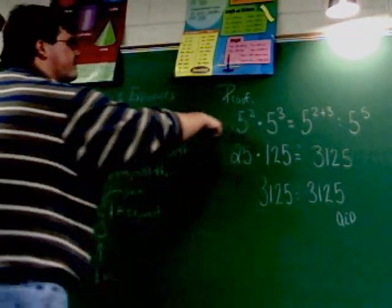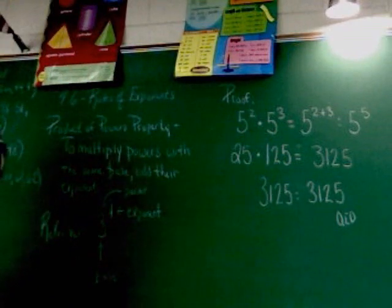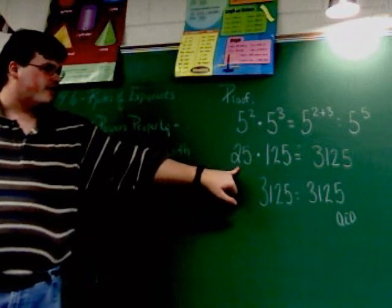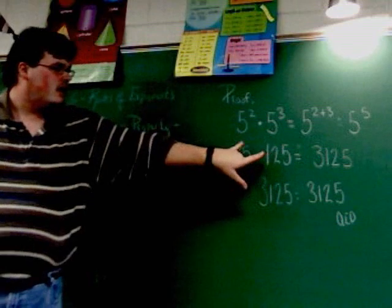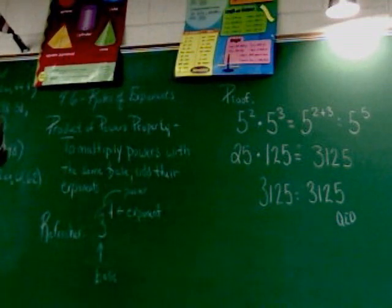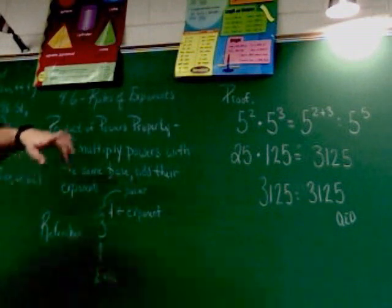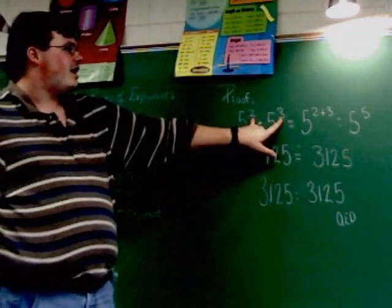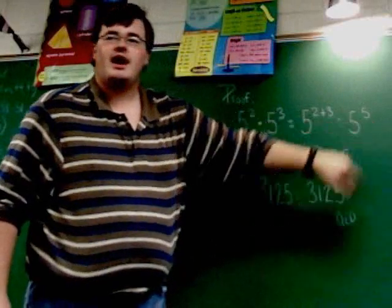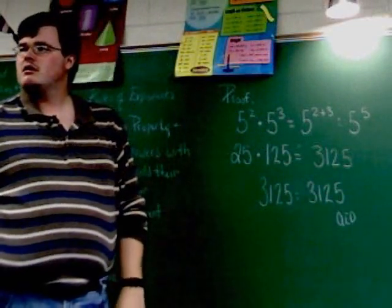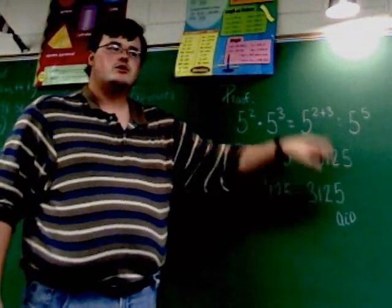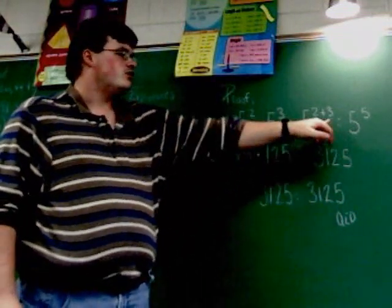We've got 5 squared times 5 cubed. I could, if I wanted to, find 5 squared and find 5 cubed. 5 squared is 25, 5 cubed is 125. And when I multiply those together, I get 3125. That's one option. If you use the rule, though, you can just add these two exponents together since these are both 5's. 2 plus 3 makes 5, so this is the same as 5 to the 5th. Well, 5 to the 5th is also 3125. So you can save yourself a lot of work because you can do it all in just one step.